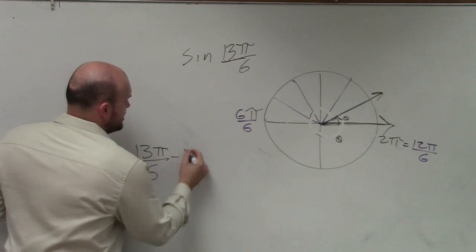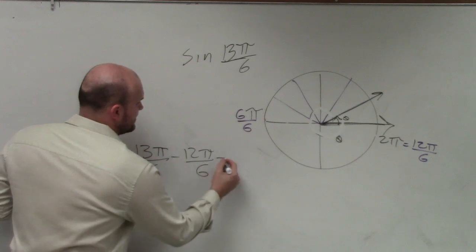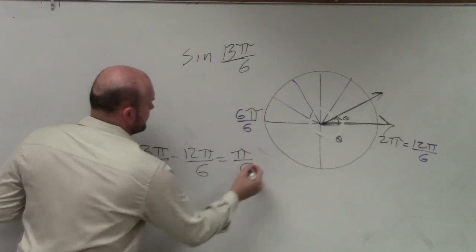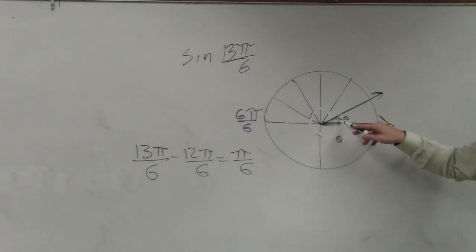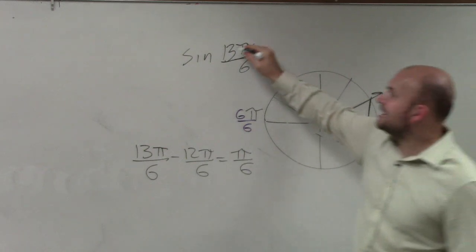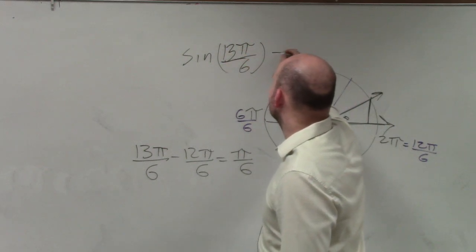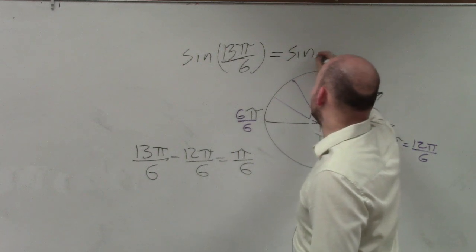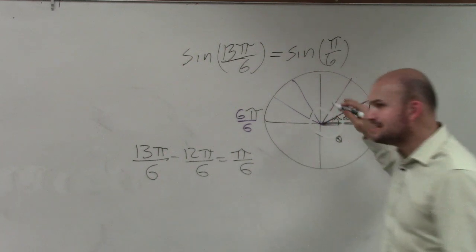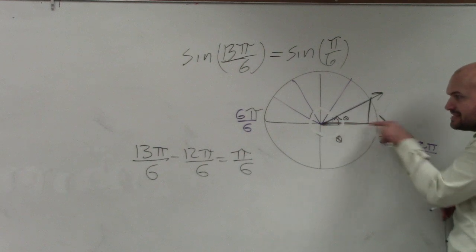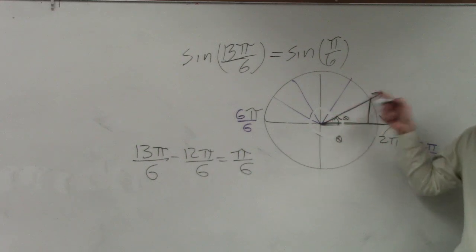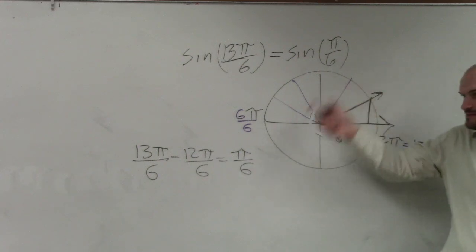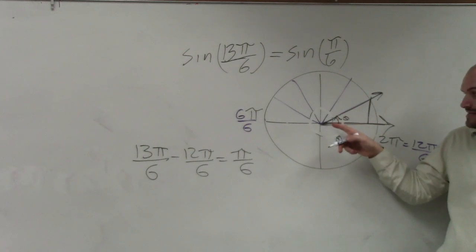Yes. So if I subtract 12 pi over 6, I get pi over 6. Can I now create a triangle with there as my theta being pi over 6? Yes. So sine of 13 pi over 6 is the same thing as sine of pi over 6. Why are they the same thing? Because the angles have the same initial and terminal side. Do you guys agree with me? The angles have the same initial and terminal side. So it doesn't matter how many times I wrap around. The angle is exactly the same.